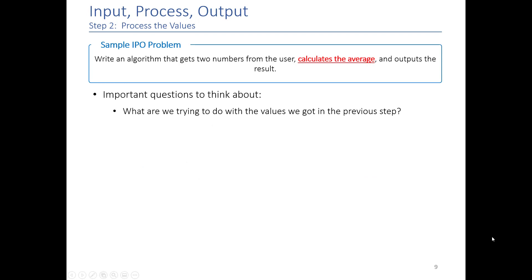So the important question to think about when you're processing values is what are you actually trying to do? If I get two numbers, it's pretty clear that I need to add them and divide them by two to get the average. So you have to think about all those steps that are involved, and usually it involves some sort of mathematics. And you may have to declare some additional variables to maybe store your answer.